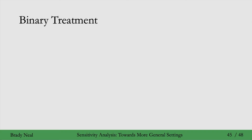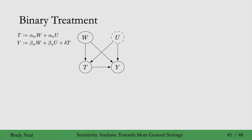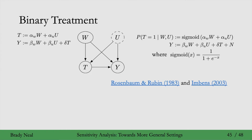The first thing is that in our setting, T isn't binary — T was just a function of W and U, it didn't need to be binary at all. But in causal inference, T is often binary, so we might want to consider a setting where the treatment is binary. That's what Rosenbaum and Rubin considered in 1983 and Imbens in 2003, where they consider a setting where the probability of treatment given W and U is a sigmoid function of a linear combination of W and U.